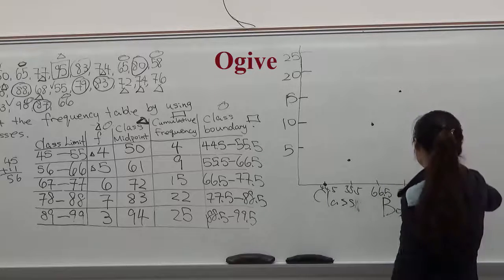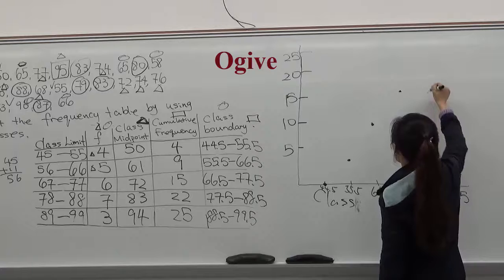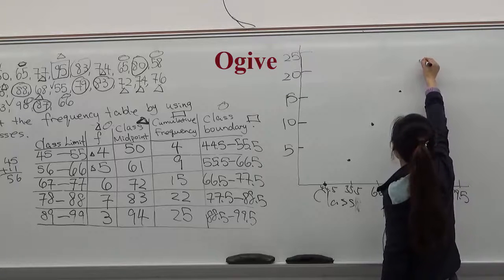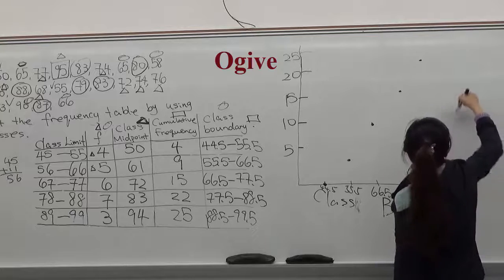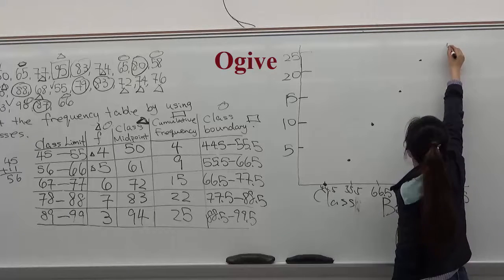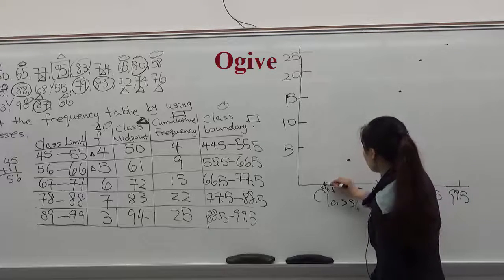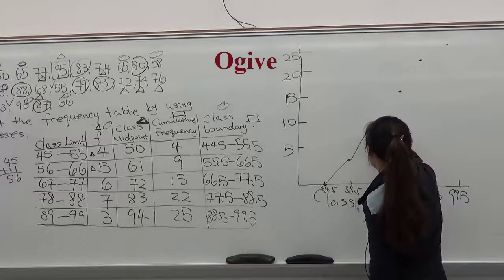And 22, 88.5. For the last one, 99.5, the cumulative frequency is 25. Now we'll start connecting those dots into a line.